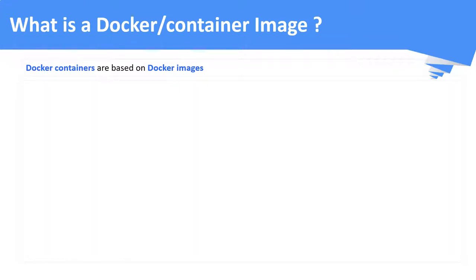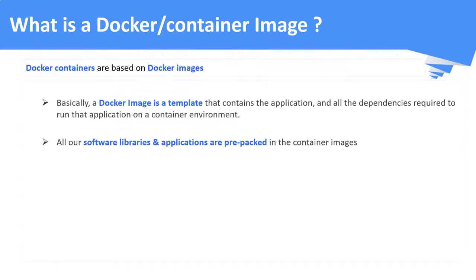What is a Docker image? A Docker image is a template that contains the application and the necessary dependencies to run that particular application alone. This is similar to your operating system images, but the difference is that in an OS image, you can see multiple applications and dependent software present by default, irrespective of whether you use them or not. Whereas in a container image, you can see only the application and its dependencies that are required. In a nutshell, container images are lightweight and OS images are heavyweight.